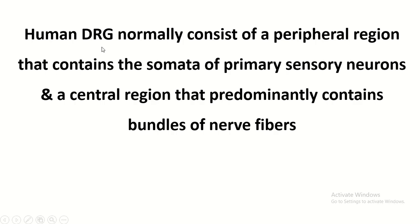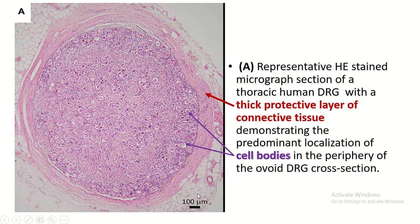Human dorsal root ganglia normally consists of a peripheral region that contains the somata of the primary sensory neurons, and a central region that permanently contains the bundle of nerve fibers. This is the cross-section of the dorsal root ganglia. You can see the thick connective tissue coat, the peripheral portions, and the central portion. The peripheral portion contains nerve cell bodies of the sensory neurons and the central portion contains nerve bundles.